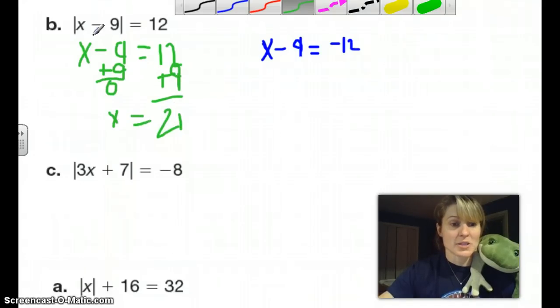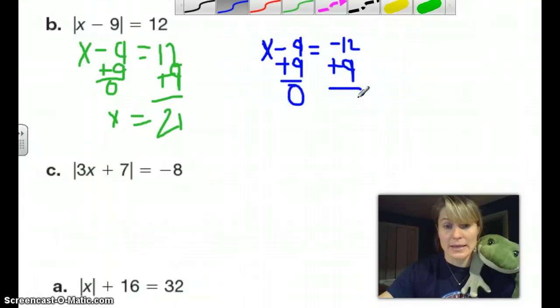We should go back and check. Is 21 minus 9 equal to 12? And the answer would be yes. Now we're going to go ahead and do the negative part of it. It's still plus 9. Negative 9, positive 9, 0. We'll do it here, but now we have negative 12 minus 9, and that would give me the answer of negative 3.